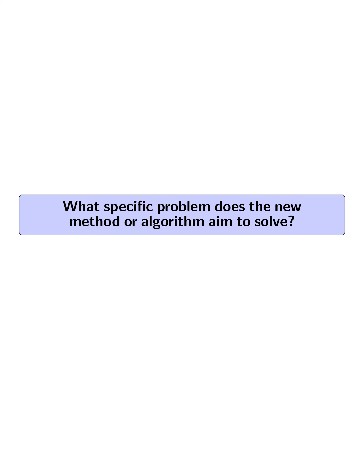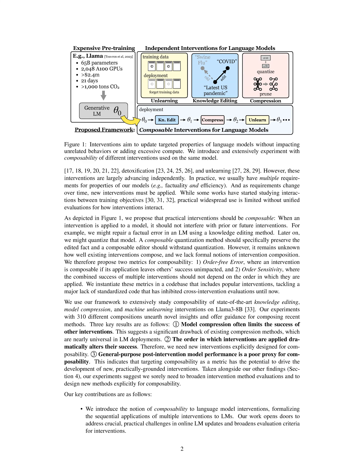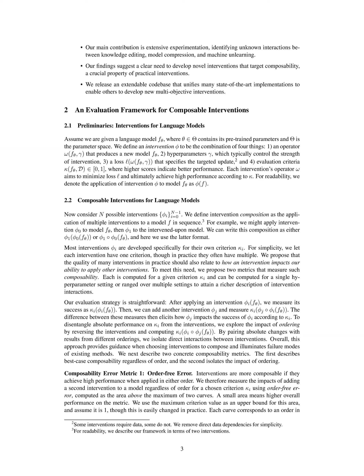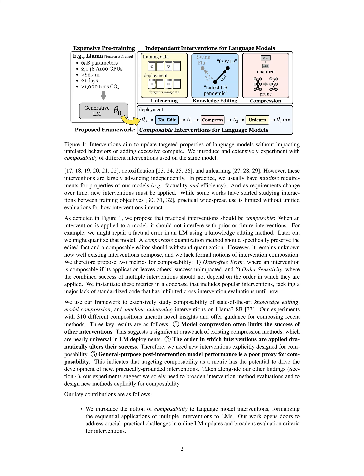What specific problem does the new method or algorithm aim to solve? The new method aims to solve the problem of ensuring the composability of interventions for language models. Specifically, it addresses the challenge of applying multiple interventions to language models in a way that does not interfere with each other's effectiveness, allowing them to be sequentially applied without negatively impacting prior or future interventions.